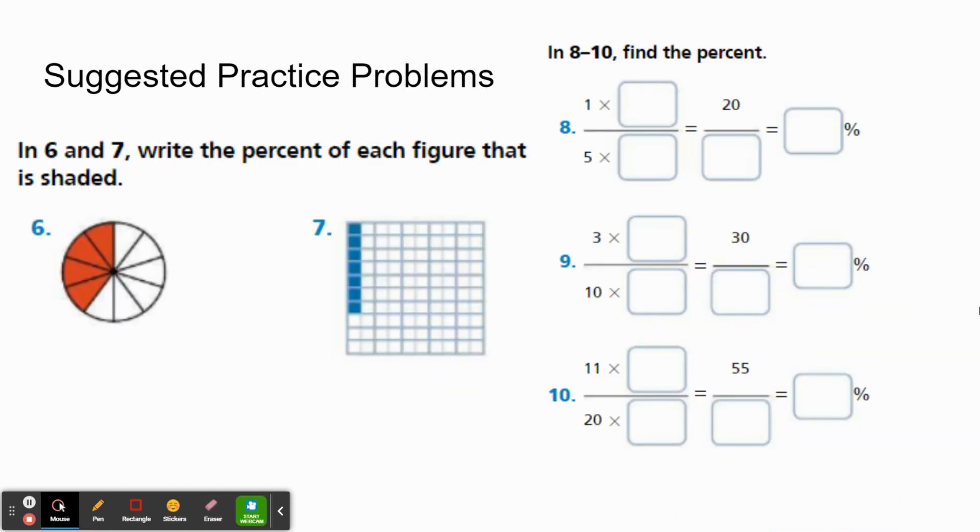Finally, we come to our suggested practice problems for today. In numbers 6 and 7, you're going to write a percent of each figure that is shaded. We've got two of them there. And then for 8 through 10, you're going to find the percentage. I'll give you a hint on this in case it's a little bit confusing: the bottom number here should always be 100, that way you can actually write it as a percent. But what do you need to do in order to find that? That's going to be the trick. So give that a think, pause the video, and of course, good luck.